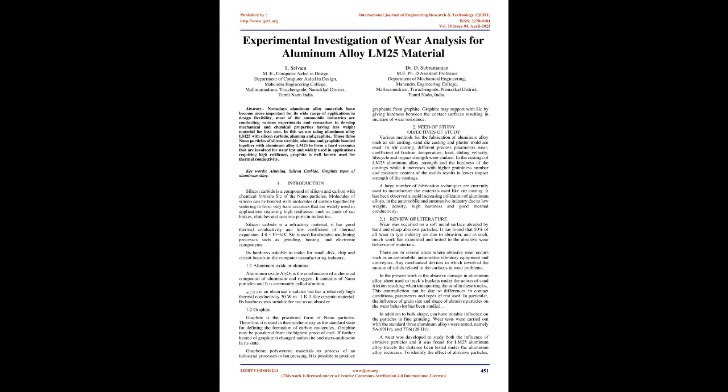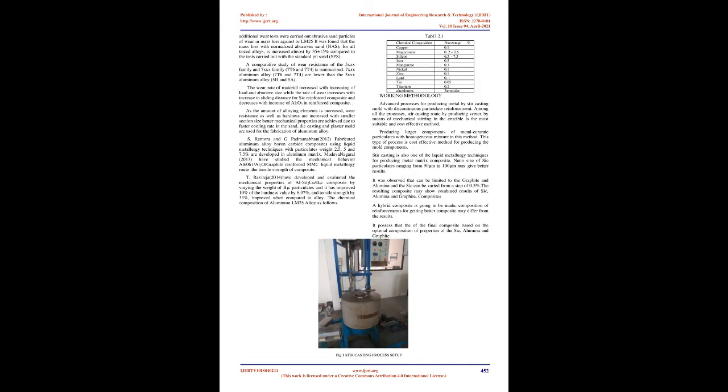Aluminum Oxide (Alumina): Aluminum oxide Al₂O₃ is a chemical compound of aluminum and oxygen. It contains nanoparticles and is commonly called alumina. Al₂O₃ is an electrical insulator but has a relatively high thermal conductivity of 30 W·m⁻¹·K⁻¹, like ceramic material. Its hardness makes it suitable for use as an abrasive.